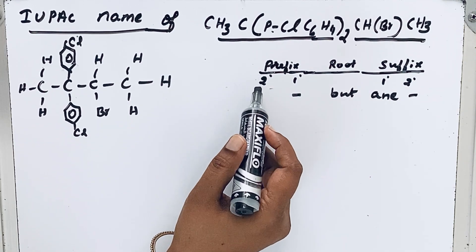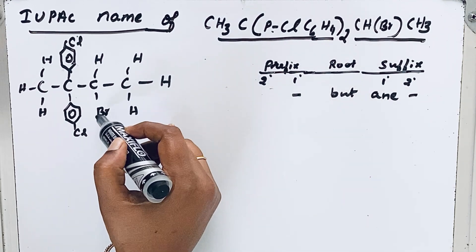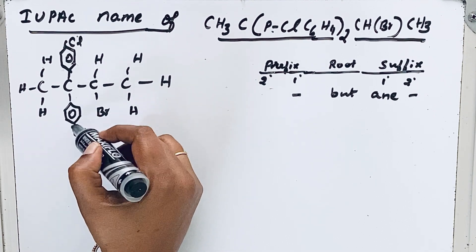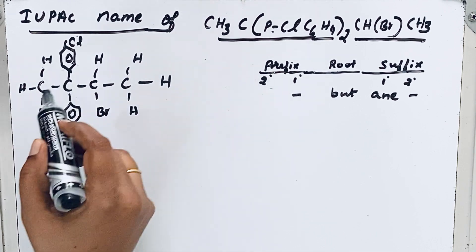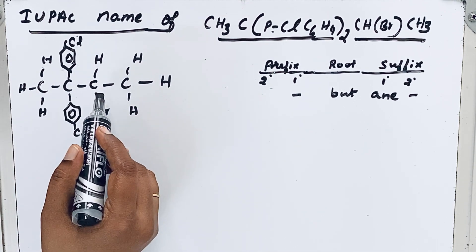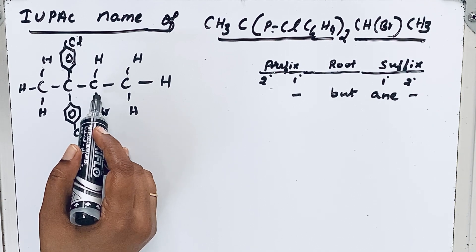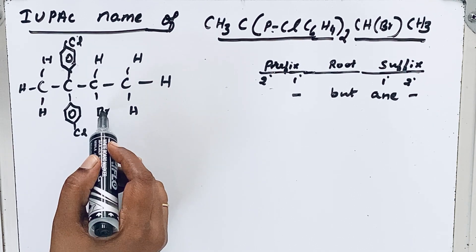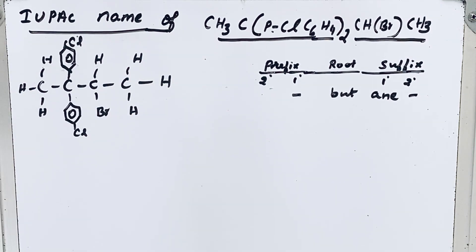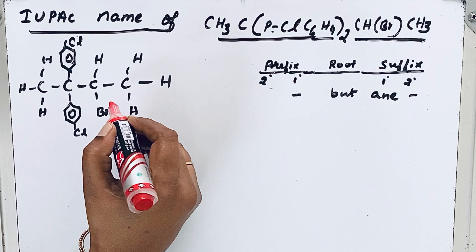Then for the secondary prefix, there are two substituents present. One is bromo group, another one is complex alkyl group, phenyl group is present. So these both are present in the equal position, so we need to follow that alphabetical order rule. So bromine can get the priority. So we are giving the numbering from here.